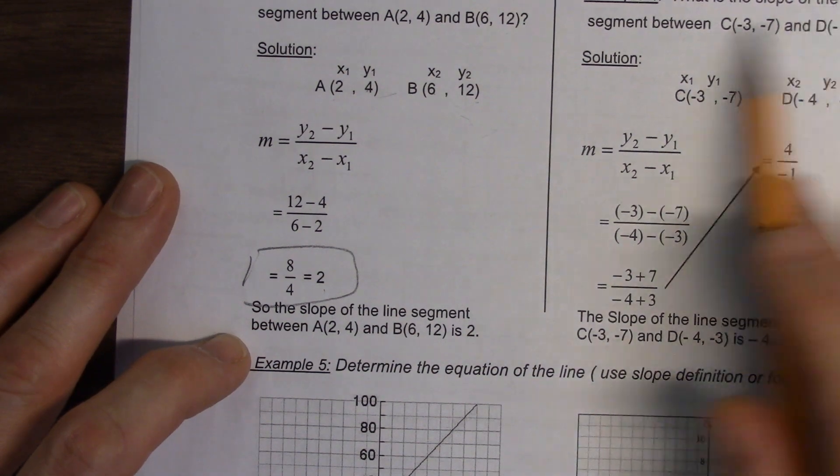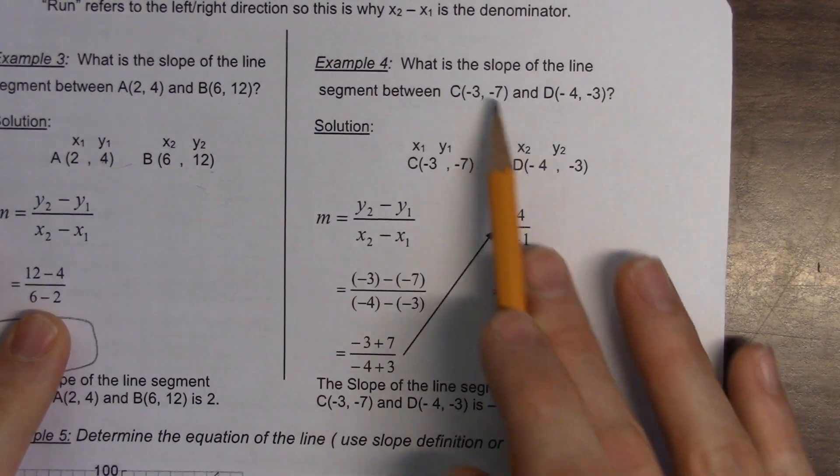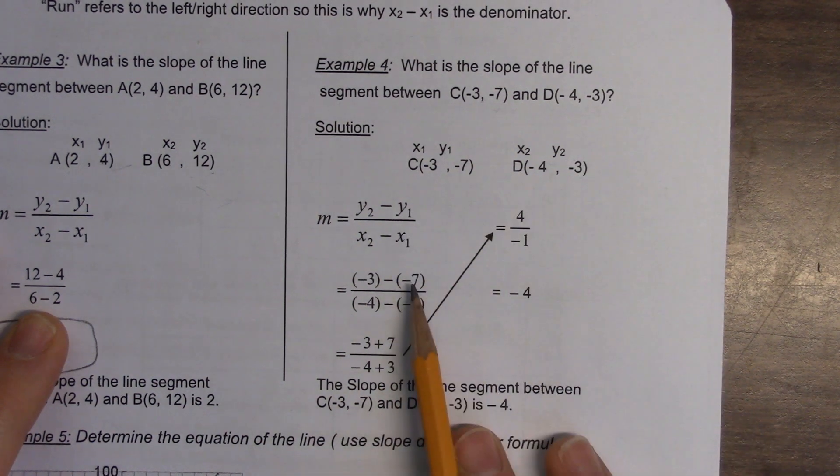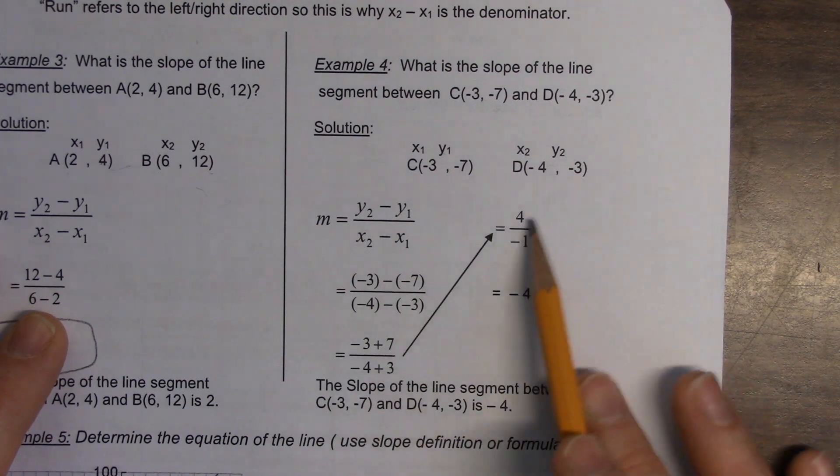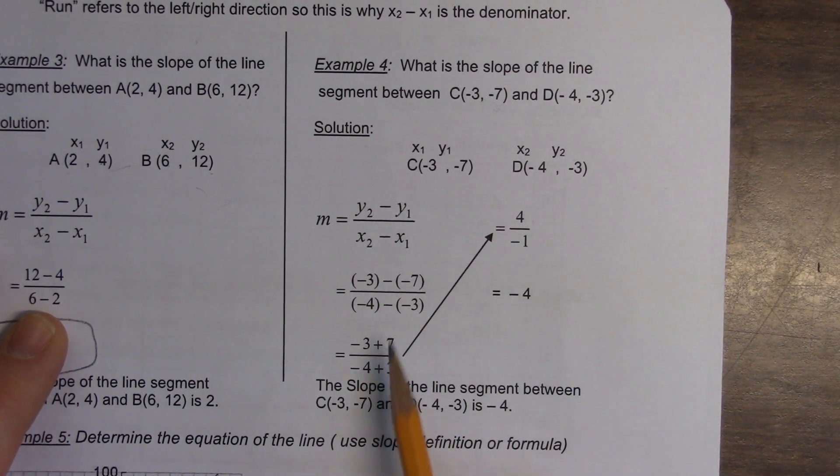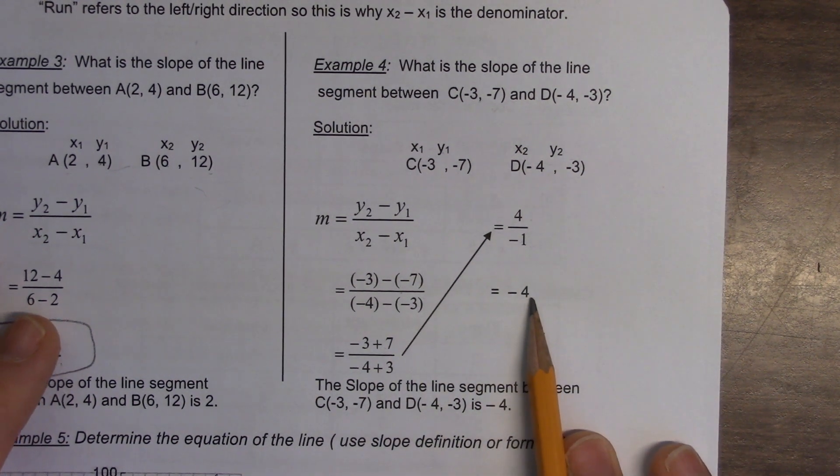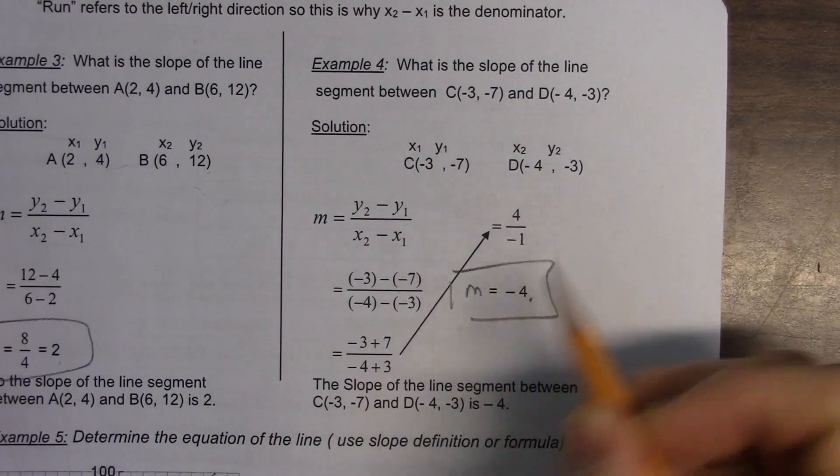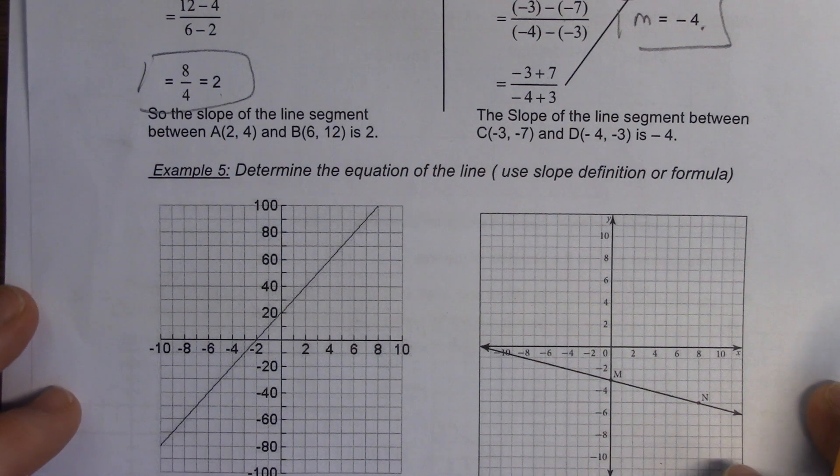Example 4. What's the slope of the line segment of these two values now? Those are my two points. X1, Y1. X2, Y2. I subtract the Y values. Negative 3 minus minus 7 becomes plus 7. Minus 3 plus 7 is 4. Minus 4 minus minus 3 is plus 3. That becomes negative 1. We get negative 4. Okay, so that's my slope for that, those two points. Any questions for those two? No? All right.